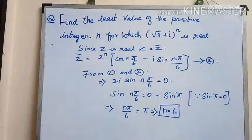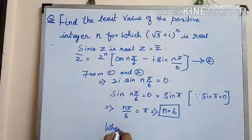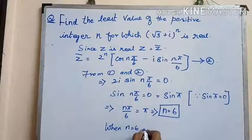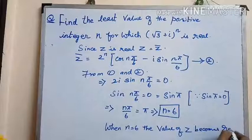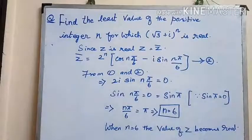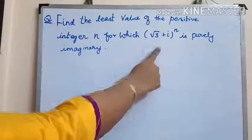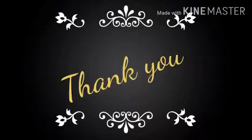For n = 6, the given complex number will be real. Here we have a problem for homework: find the least value of positive integer n for which (√3 + i)^n is purely imaginary. Try it out and post your answers. Hope the session was interesting, thank you.